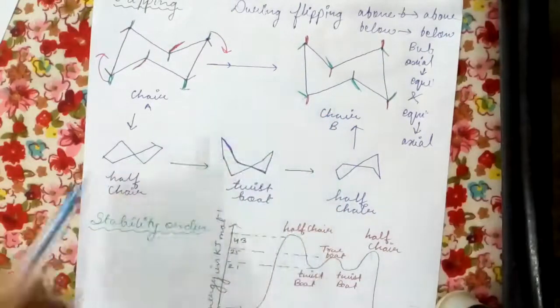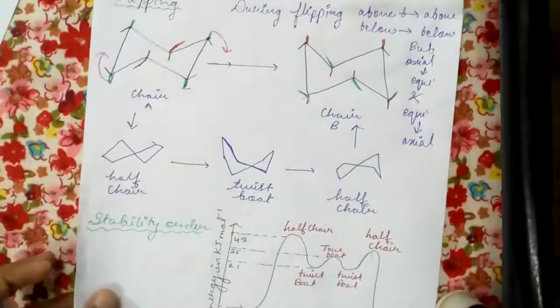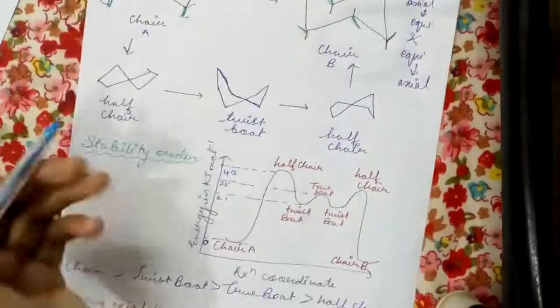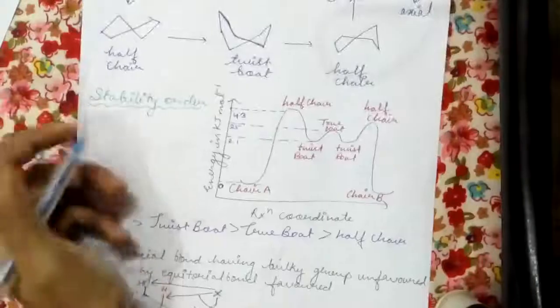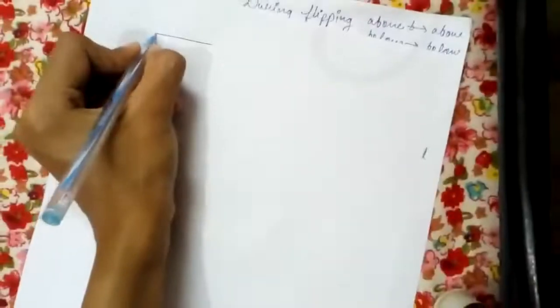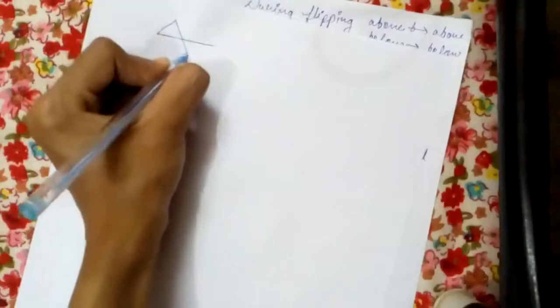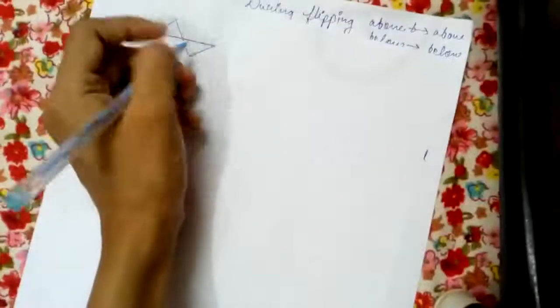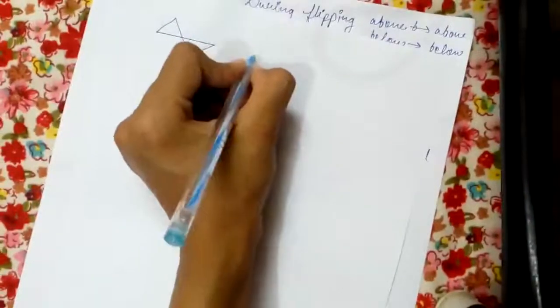This is how it is achieved. Let me help you with half chair structure, how to draw it easily. Let me take a sheet. It is very easy. We can also draw it like this: first draw a straight line, then one above, and then one below.